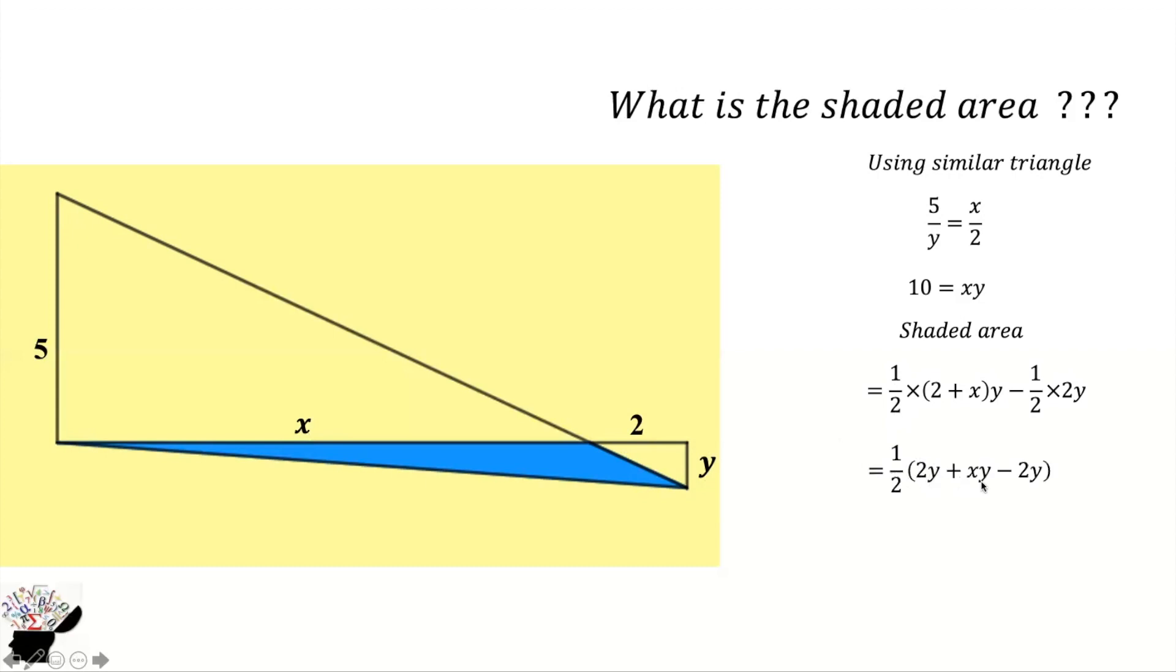We will bring the half out, then we are going to get 2y plus xy minus 2y. So 2y will cancel itself and xy is already 10, so we are going to get half into 10 and the answer is 5.